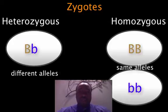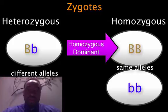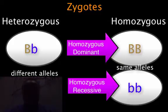Big B, big B is homozygous dominant, while little b, little b is homozygous recessive.